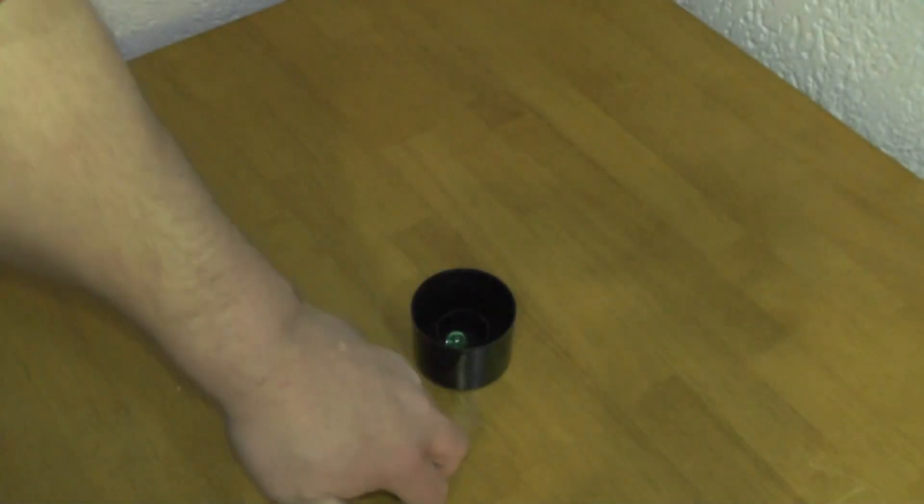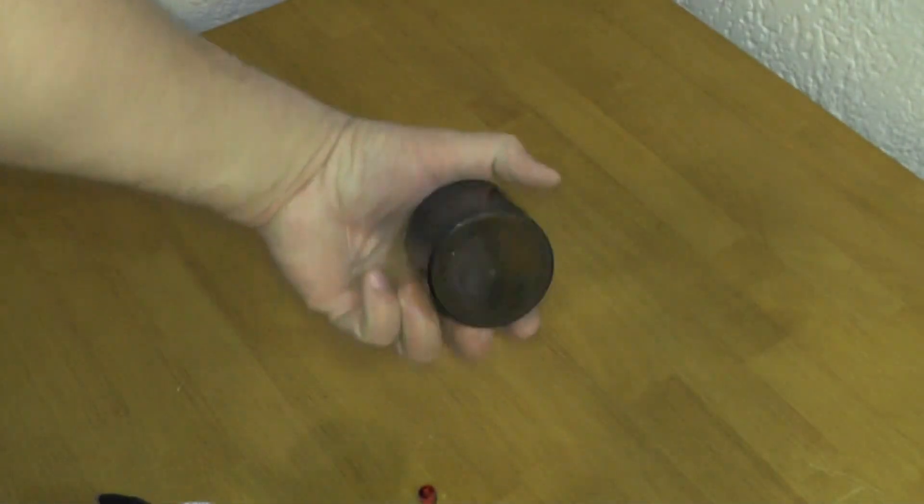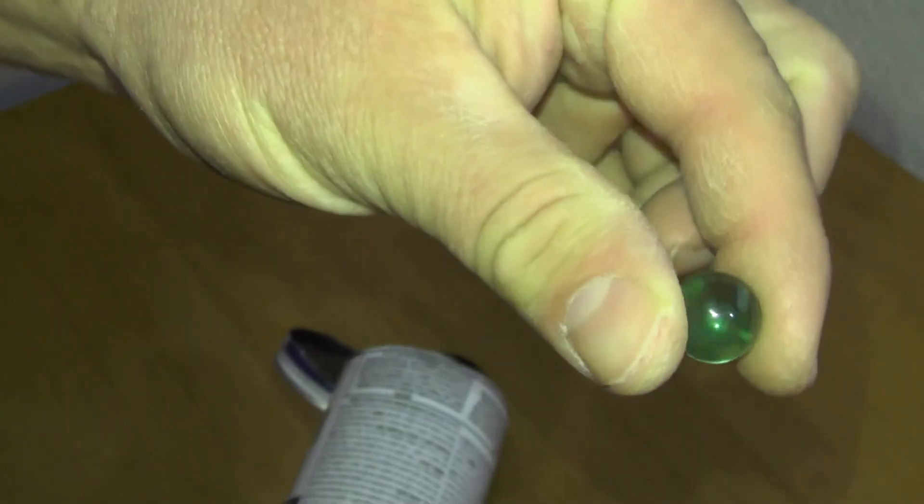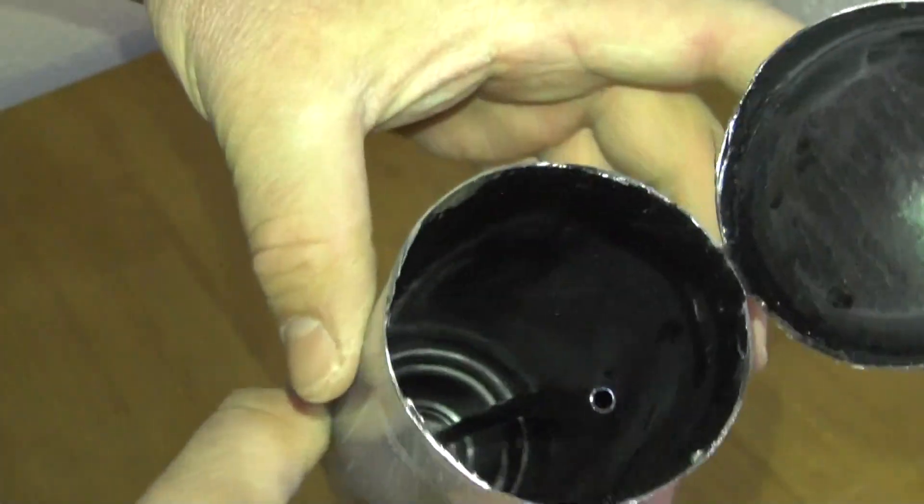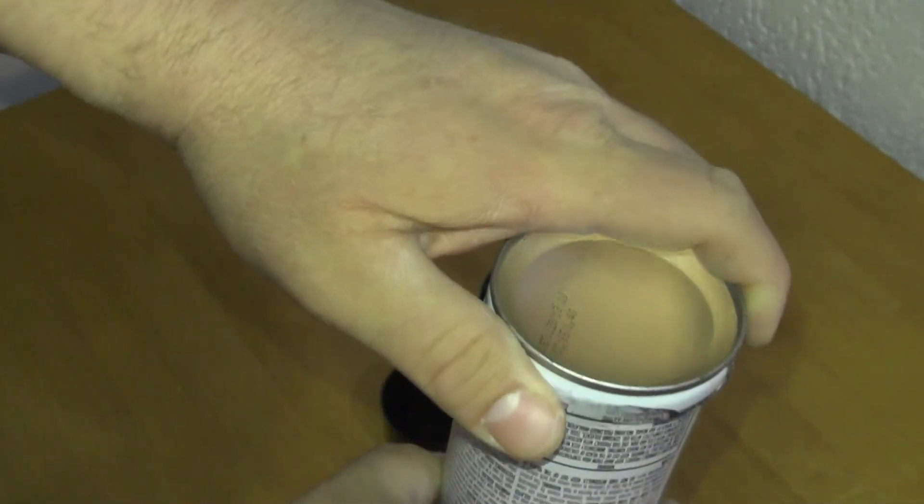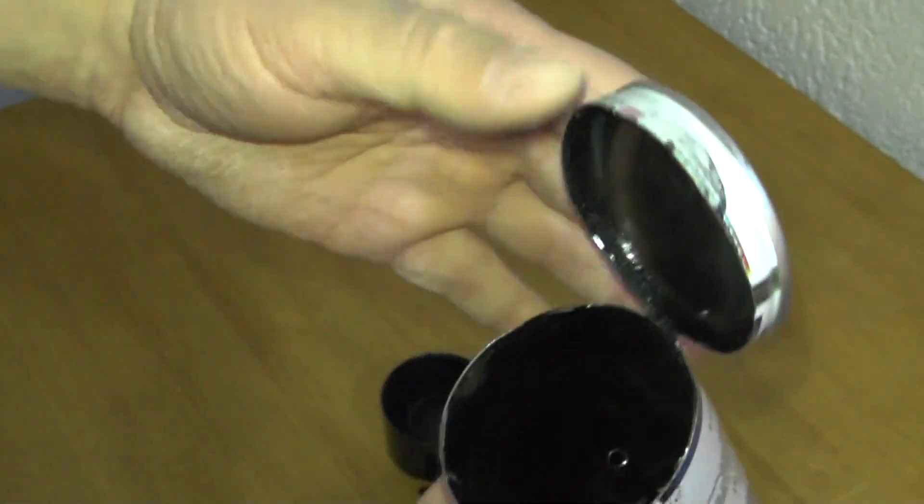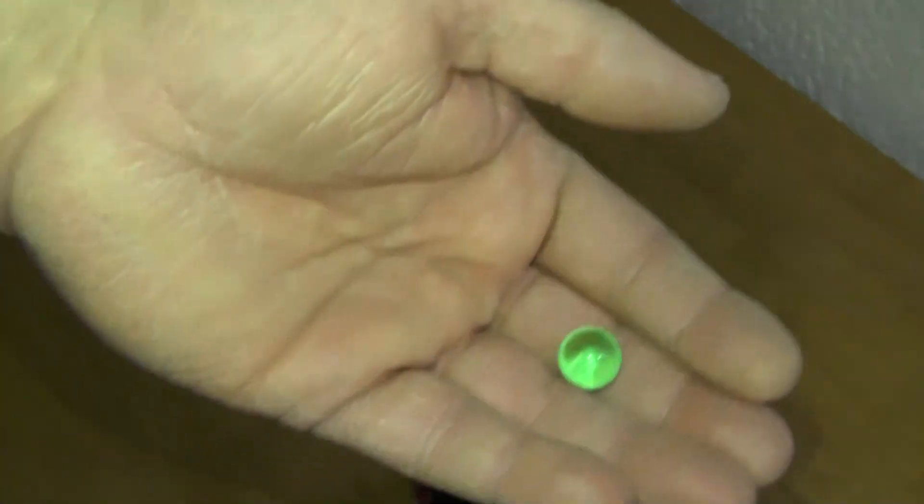So what about that rattle? Well, there it is, just a little green marble that they have in the can with the paint. So when you shake the paint can, that little marble is floating around with the paint to mix it all up.